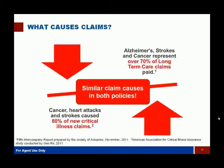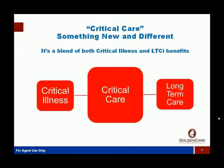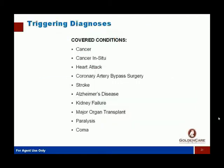What we want to spend more time on today is the huge crossover of claims with long-term care insurance — this is what gets agents excited. Alzheimer's, strokes, and cancer represent 70% of all claims dollars going out for long-term care insurance. On the flip side, cancer, heart attacks, and strokes cause 80% of new critical illness claims. That's a huge crossover, which is why we talk about critical care as a new concept to solve an existing problem — it's the perfect fit for a long-term care specialist.